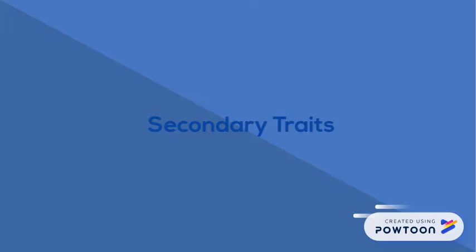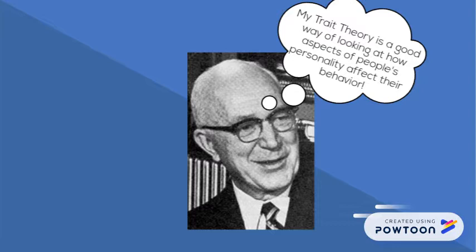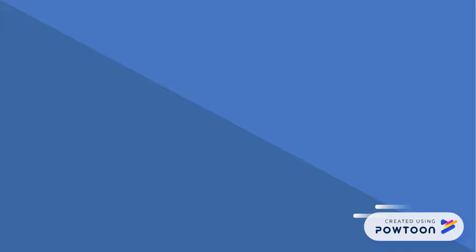Lastly, secondary traits are traits that sometimes relate to an attitude and are usually shown in certain situations. This theory helps stress the characteristics that capture what a person is actually like.